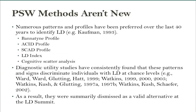There was the Bannatine profile, the ACID profile, the SCAD profile. These are all subtest configurations on the Wechsler scales that were prophesied as indicating a person had LD.